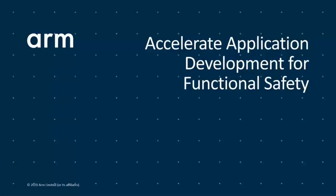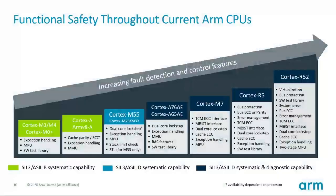How can you accelerate the development of a functional safety application? There are a couple of components available today that help you to reduce time to market. First of all, you can select a Cortex processor that fits your needs. There are many options available for all the different SIL levels, up to ASIL D. This gives you the confidence that you can meet your target SIL level with your selected hardware, which is the basis that your software is running on.